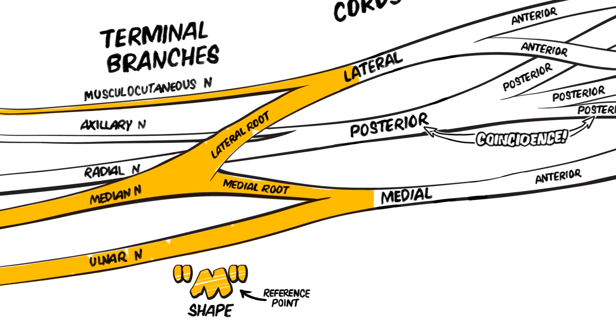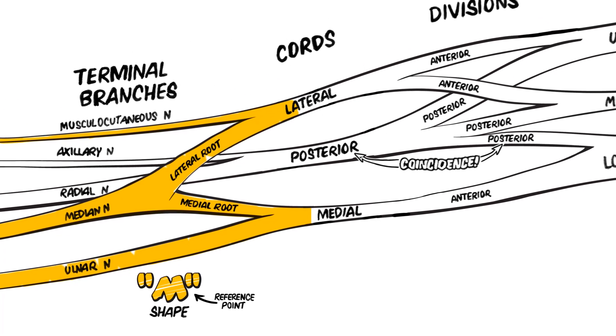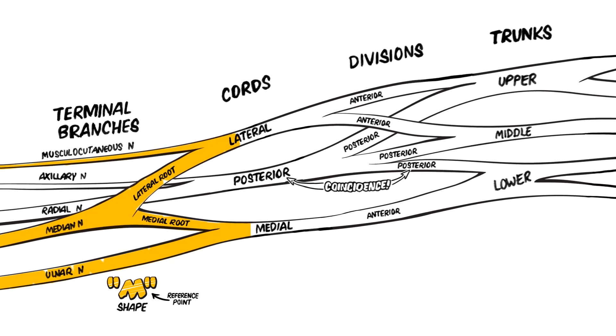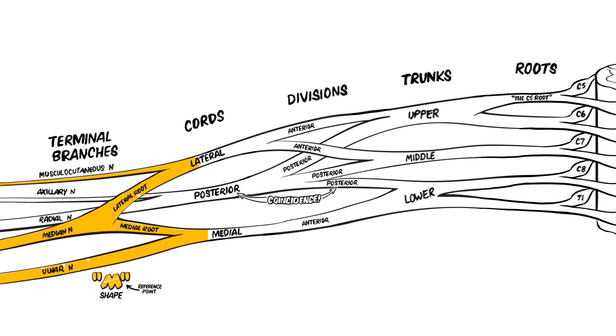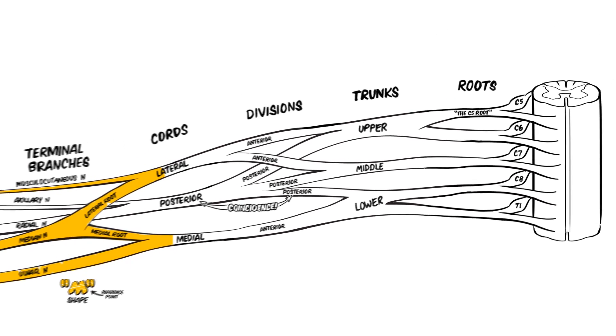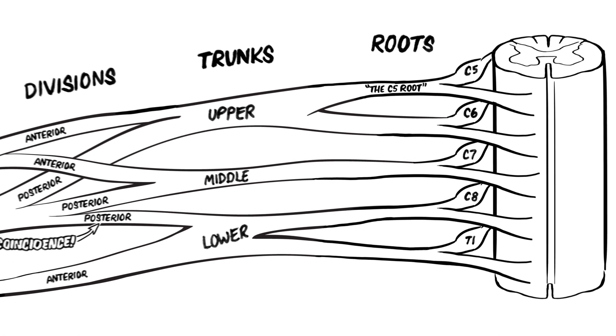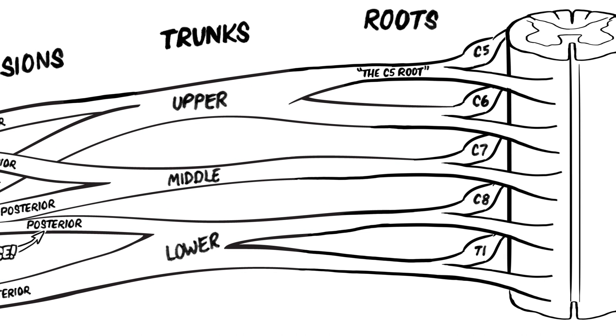Now that we understand the major structural features of the brachial plexus, it's time to add in important smaller nerves that arise from the roots, trunks, and cords. Note that no nerves arise directly from the divisions. Two nerves arise from the roots: the dorsal scapular nerve, which is a branch of the C5 root, and the long thoracic nerve, which is formed by branches from C5, C6, and C7 roots.